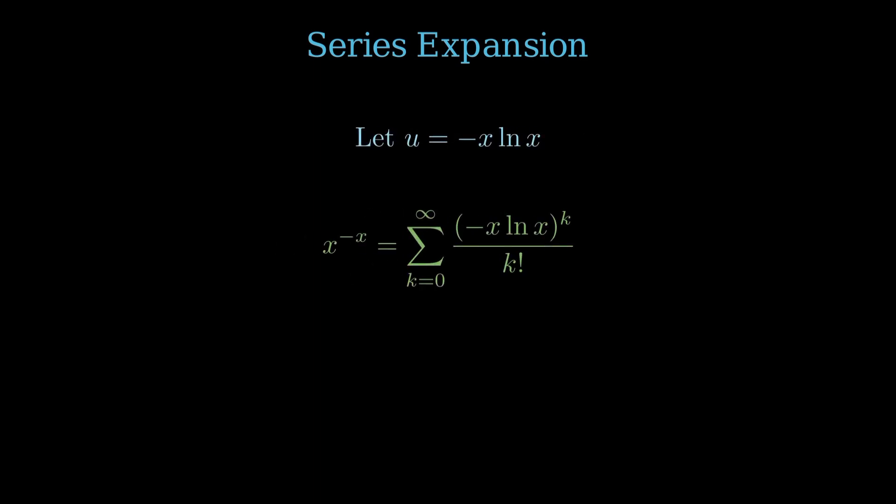We are aiming to evaluate an integral involving x to the negative x. We can write x to the negative x as e to the natural log of x to the negative x, which simplifies to e to the negative x times natural log x. So, we'll substitute u equals negative x times natural log x into the Taylor series for e to the u. This will give us an infinite series for x to the negative x, a key to our solution.